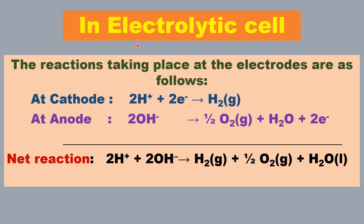Let us see the reactions taking place at the cathode and the anode during electrolysis of 1 normal sulfuric acid solution. At the cathode: 2H⁺ + 2e⁻ → H₂ gas. At the anode: water consists of H⁺ and OH⁻, so OH⁻ is oxidized to give oxygen gas. The net reaction is: 2H⁺ + 2OH⁻ → H₂ + O₂ + H₂O.